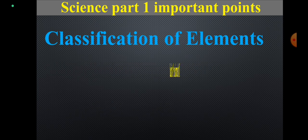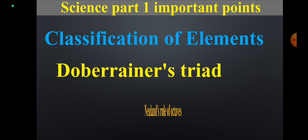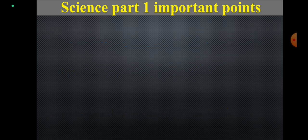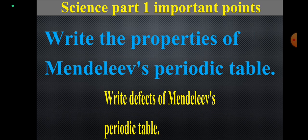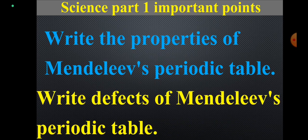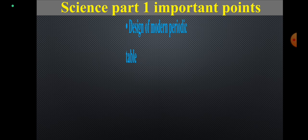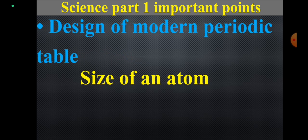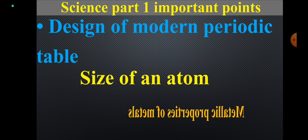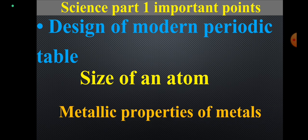Classification of Elements: Dobereiner's Triads, Newland's Rule of Octaves. Write the Properties of Mendeleev's Periodic Table. Write the Defects of Mendeleev's Periodic Table. Design of Modern Periodic Table, Size of an Atom, Metallic Properties of Metals.